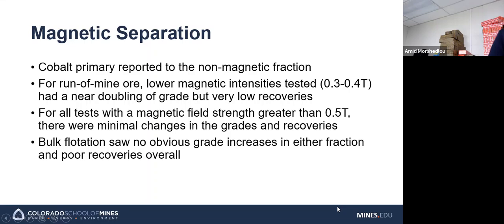For the run of mine ore, the lower magnetic intensities, about doubled the grade of cobalt we had, but it was very low recoveries, less than 5%, and that's just due to the makeup of the particles that we had. And then with all testing that we had over a magnetic field strength of 0.5 tesla, there were minimal changes in the grades and recoveries. This was also about expected. And then bulk flotation concentrates saw no obvious grade increases in either fraction, and just generally poor recoveries overall.